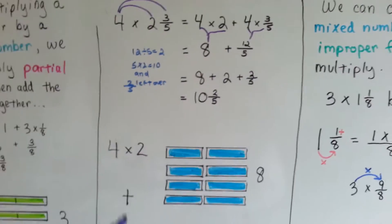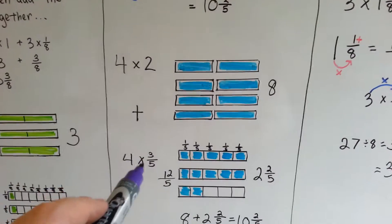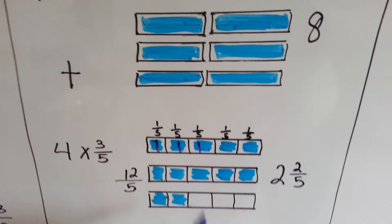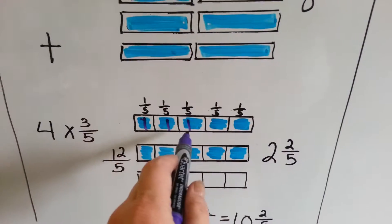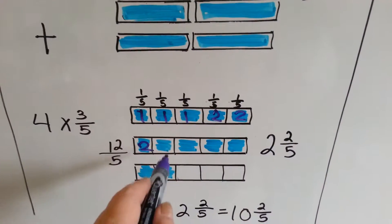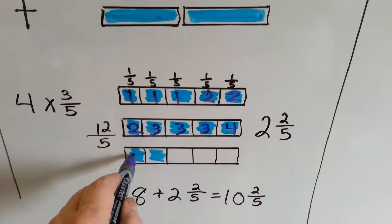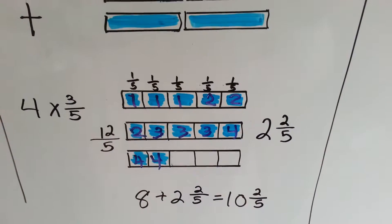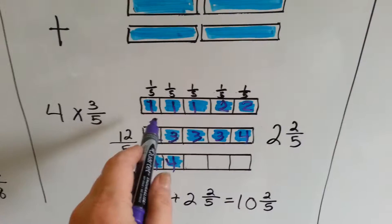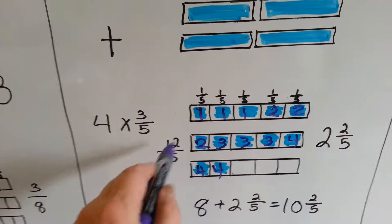Here's what that looks like as a model. We've got 4 times 2 and 4 times 3 fifths. 4 times 2 is 8. For 4 times 3 fifths: here's 1 group of 3 fifths — 1 fifth, 1 fifth, 1 fifth. Two times that gives 3 fifths again, three times gives 3 fifths, and four times gives 3 fifths. Counting all the little 1 fifths, we get 12 fifths — because 4 times 3 is 12, over 5.